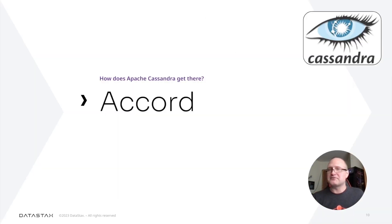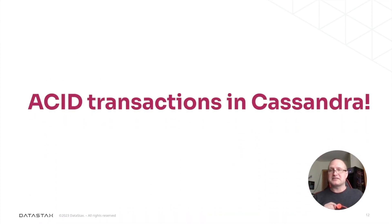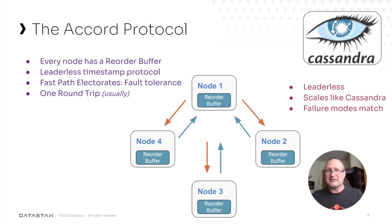So how does Apache Cassandra get there? It gets there through something called Accord. As part of Cassandra Enhancement Process number 15 for general purpose transactions, it introduces the Accord timestamp consensus protocol, which offers strict serializable isolation, usually in one round trip, and it can operate over multiple keys. Essentially, this is the CEP that's going to put ACID in Cassandra. Accord is a leaderless timestamp protocol, and it works because every node has a reorder buffer — a structure that helps guarantee that one round-trip consensus — and it does so over what we call the fast path. With these fast path electorates, we can actually have fault tolerance much like we do normally in Cassandra.